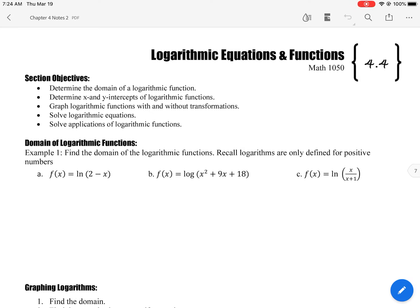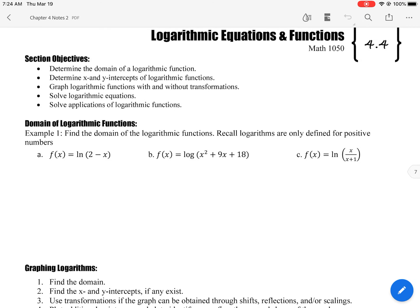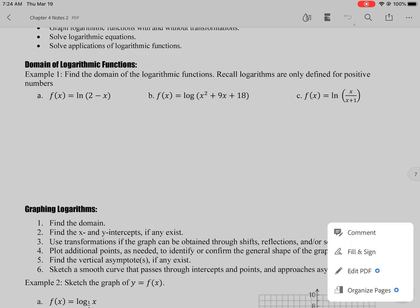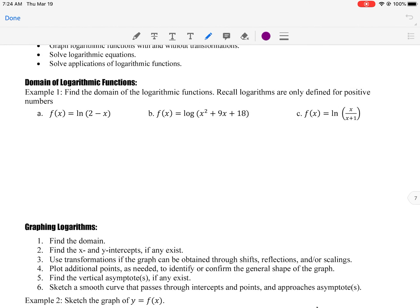Alright, we've now moved on to logarithmic equations and functions. So the first thing we're going to do is look at the domain. So I want to remind you, as you think about the graph of a log, remember if we think about the little x-y axis, it looks something like this. So think about that domain. That domain has to be positive. And it can't be zero either because that's where the asymptote is.